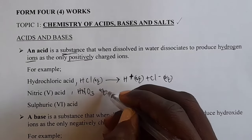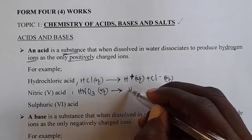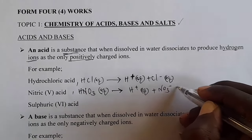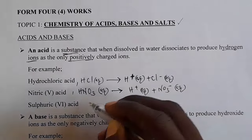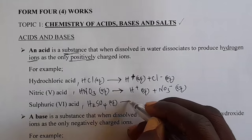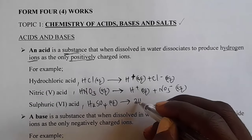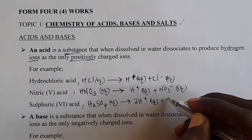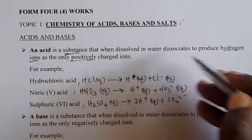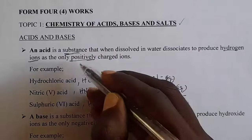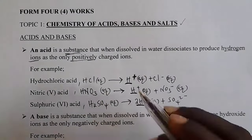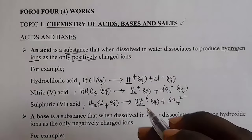Similarly, nitric acid (HNO3) dissolved in water dissociates producing hydrogen ions as the only positively charged ions, and also nitrate ions. For sulfuric acid, H2SO4, it dissociates in water to produce two hydrogen ions and sulfate ions. So, an acid is a substance that when dissolved in water dissociates to produce hydrogen ions as the only positively charged ions.